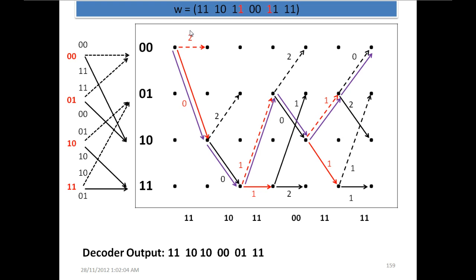All other branches are rejected similarly because their initial stage metric is 2, and by the same logic are discontinued. The maximum likelihood path — the least metric path — has a total metric of 2, and we follow this path shown by the purple/violet line. Following this path, we can decode the correct output. For example, at one stage the received 11 is correctly decoded as 10 — although it was received as 11, the decoder decoded it as 10.